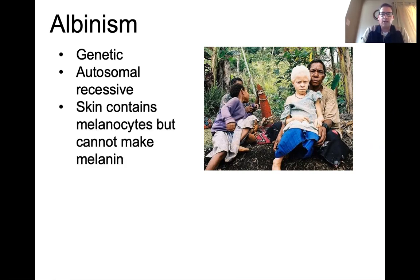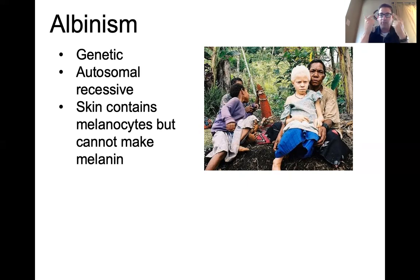With albinism, your skin contains melanocytes, but they cannot make melanin. So you produce no melanin anywhere in the body, meaning no pigmentation and no protection from UV rays, which can be deadly if you're living near the equator. Albinos appear to have red eyes because they produce no pigment for the iris. What you're seeing is light reflecting off the retina, which is highly vascularized — meaning it has a lot of blood vessels — so the reflected light appears red.